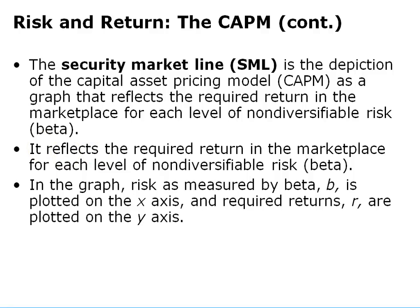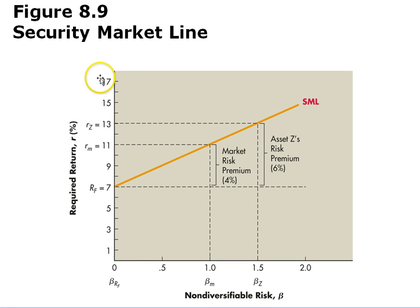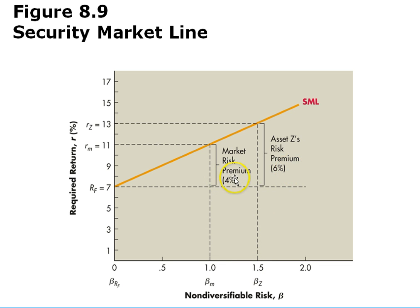The Security Market Line is a graphical representation of the Capital Asset Pricing Model. It reflects the required return in the marketplace for each level of non-diversifiable risk, or beta. On the graph, beta is plotted on the x-axis and returns are plotted on the y-axis. At a beta of 1, the market return is 11%. With a risk-free rate of 7%, the market risk premium is 4%. For a beta of 1.5, we multiply 4% by 1.5 to get a 6% risk premium, giving a required return of 13% for asset Z.